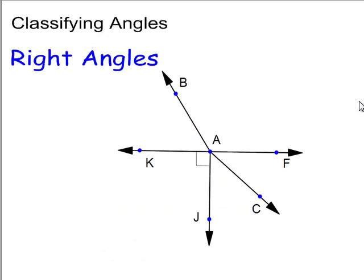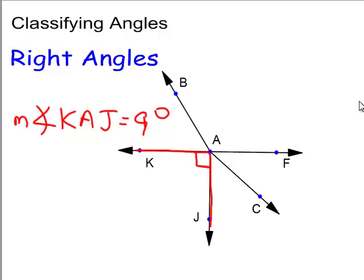Right angles are 90 degrees. Perpendicular lines — that mark right here indicates 90 degrees, or perpendicularity. So the measure of angle KAJ is 90 degrees.